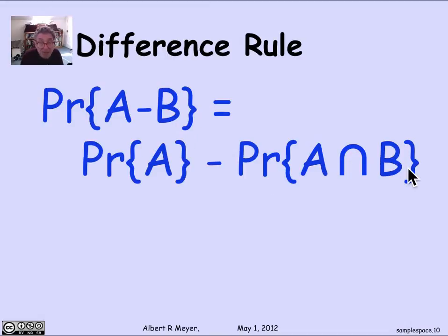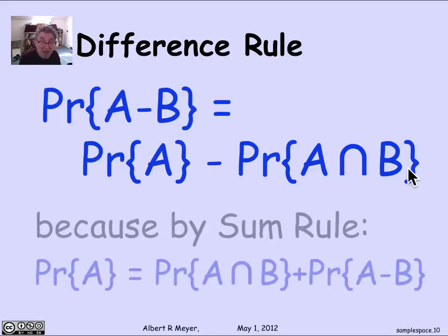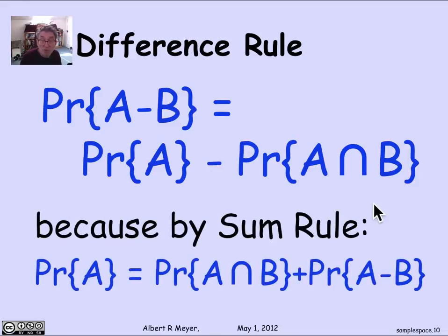Indeed, the proof of this is just like the proof of cardinality. It follows directly from the sum rule for probabilities, which corresponds to the sum rule for cardinalities. Namely, by the sum rule for probabilities, what we know is that A is equal, set theoretically, to A intersection B plus A minus B.